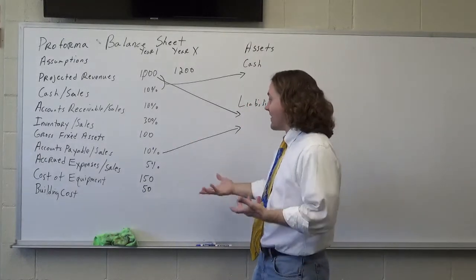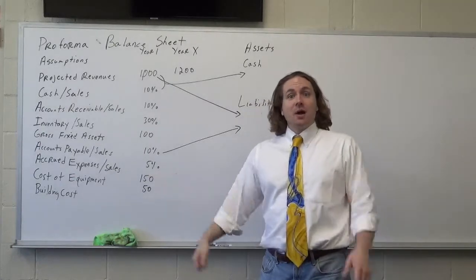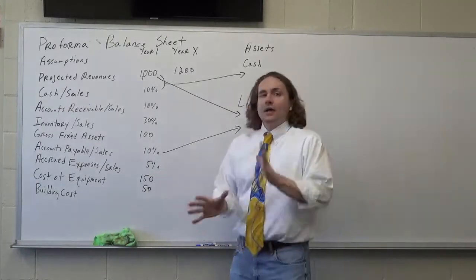Your accounts payable might be 10%, 5%. Cost of equipment, $150. Building cost might be $50. Again, you're just making projections.